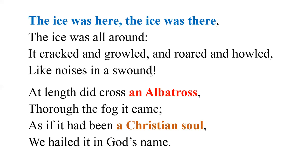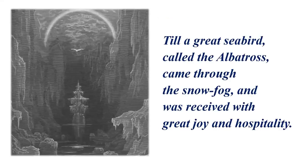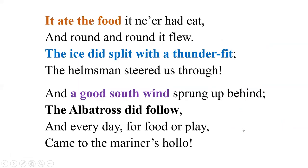'Like noises in a swound' — swound means fainting. Then, 'At length did cross an Albatross.' Now comes the introduction of the albatross. Through the fog it came 'as if it had been a Christian soul; we hailed it in God's name.' The arrival of the albatross is seen as a blessing, a good omen. The gloss reads: 'Till a great sea-bird, called the Albatross, came through the snow-fog, and was received with great joy and hospitality.'